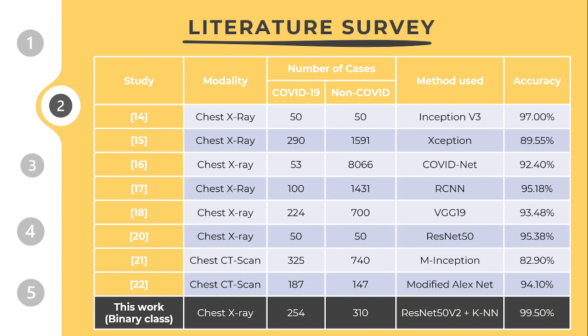For this purpose, we used 254 COVID-19 and 310 non-COVID images along with ResNet50V2 and KNN, and achieved an accuracy of 99.5%, which we believe is the best among all compared methods.